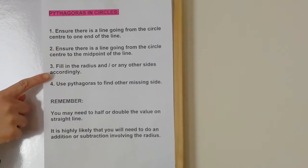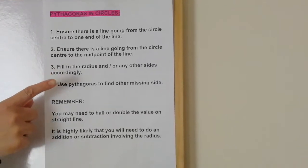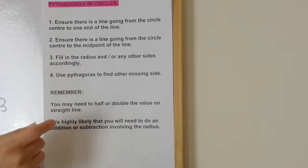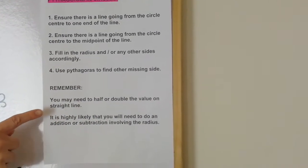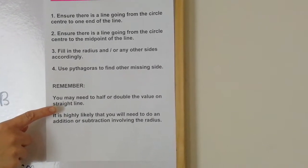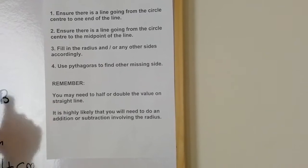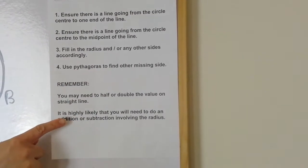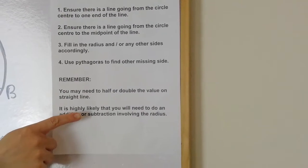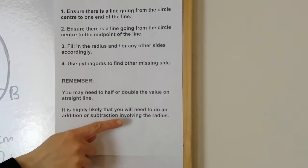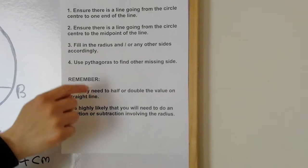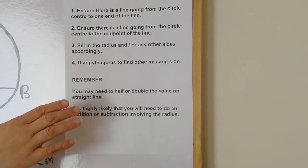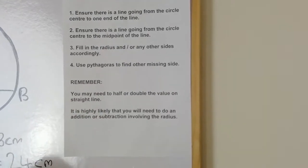Step three: fill in the radius and/or any other sides accordingly, and then step four: use Pythagoras to find the other missing side. Two things to remember at the bottom: you may need to half or double the value on the straight line, and it's highly likely that you'll need to do an addition or subtraction involving the radius. These two can take place anywhere within those four steps. The best way to demonstrate them is to use some examples.